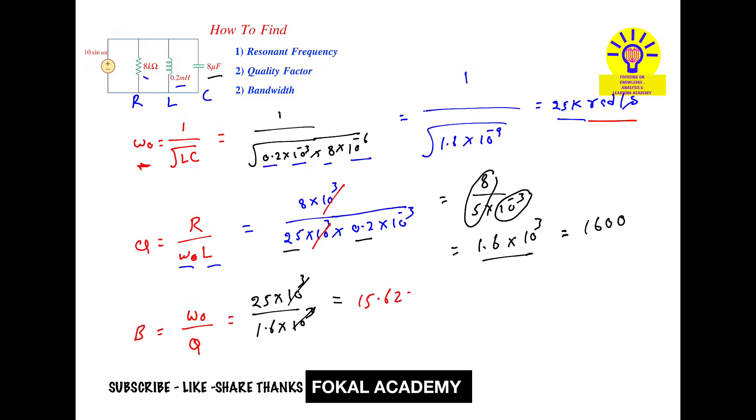15.625 radians per second. So this is the bandwidth, this is the quality factor, and this is the resonant frequency for the given parallel RLC circuit. This is the process of calculation of resonant frequency, quality factor, and bandwidth.